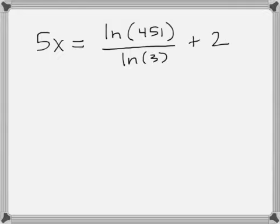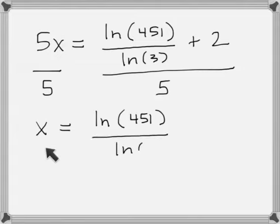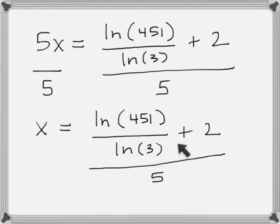Looking at the equation now, all I've got to do to get x by itself is divide both sides by 5. On the left-hand side, I'll wind up with x. On the right, I'll have this complex fraction: ln 451 divided by ln 3 plus 2, all divided by 5.